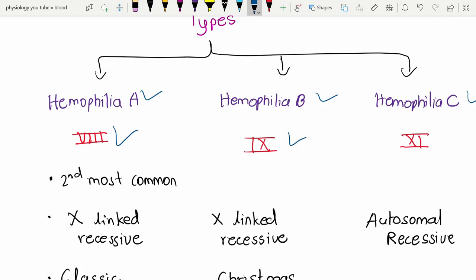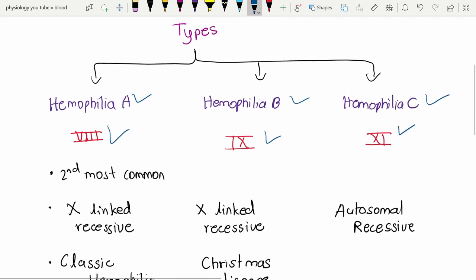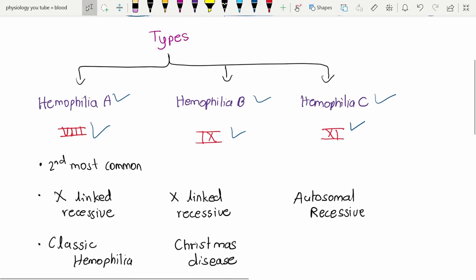In hemophilia C, there is deficiency of factor XI. After some time, we will start confusing these, so what we need to remember is only one thing: factor VIII is also called antihemophilic factor A, so you can easily remember factor VIII deficiency in hemophilia A.